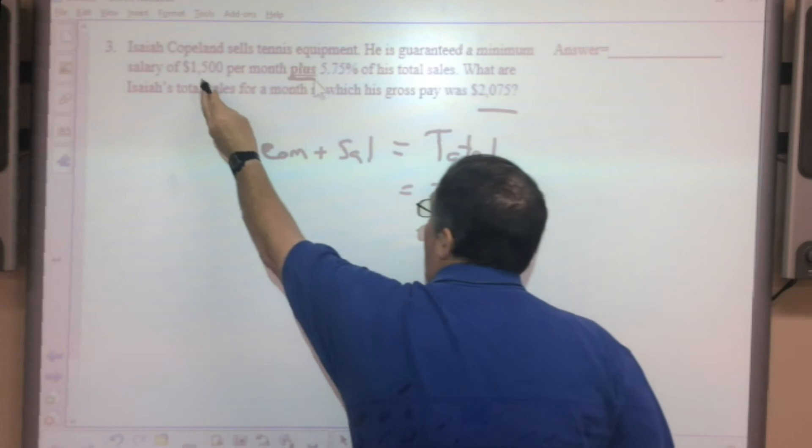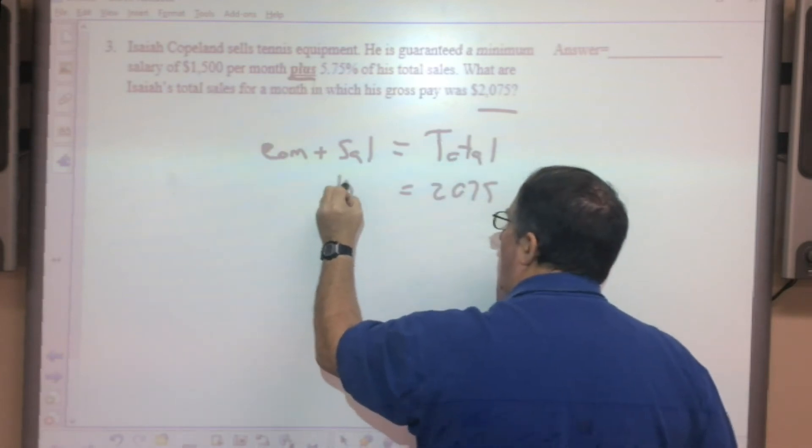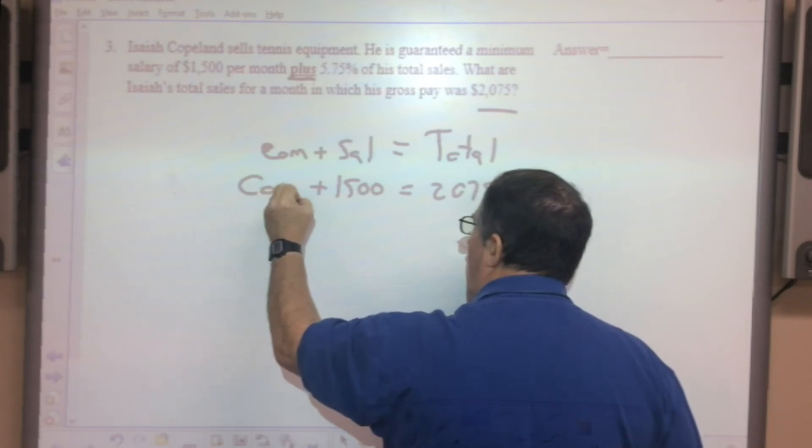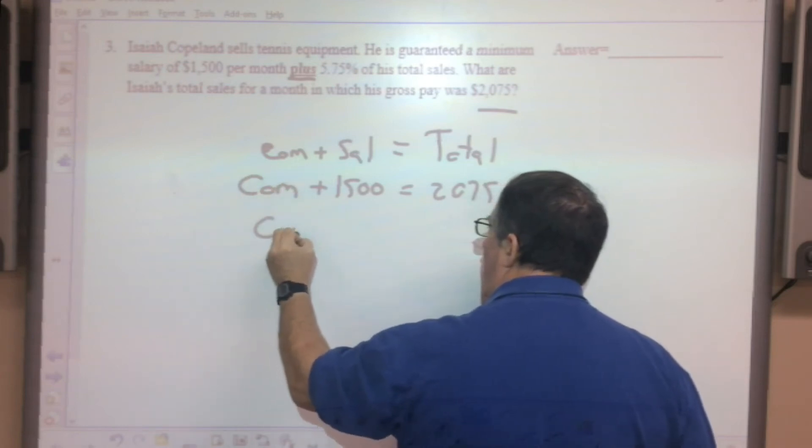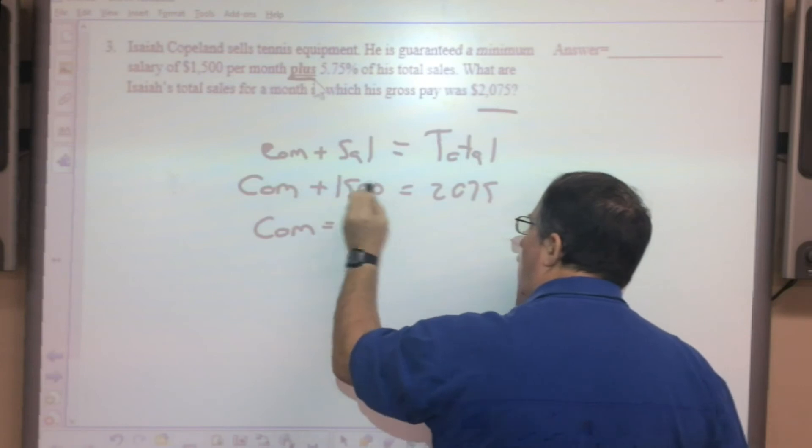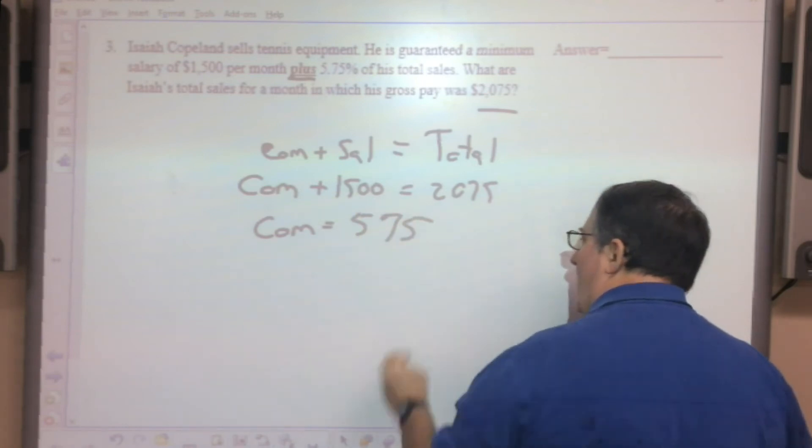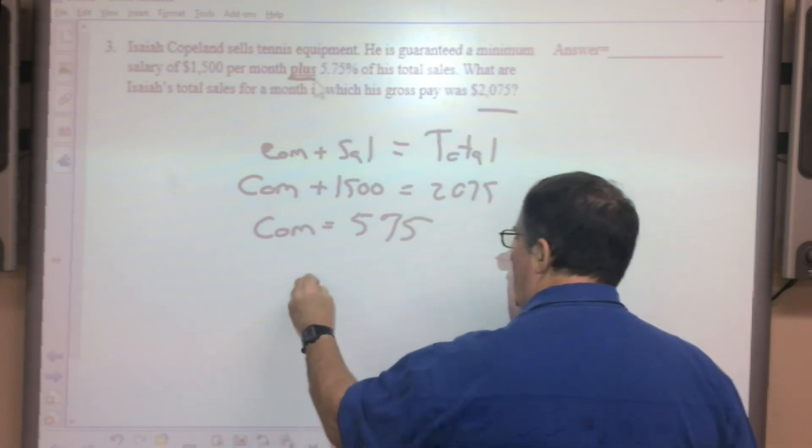Your gross income is 2075, and then your commission and salary. So your salary is 1500 and your commission we're going to calculate. We have to find out how much is related to just the commission, so subtract 1500 from both sides.